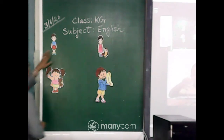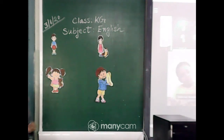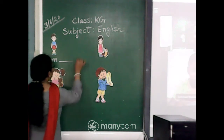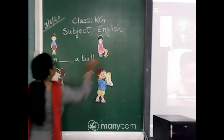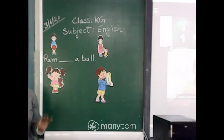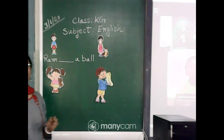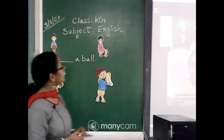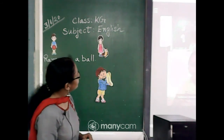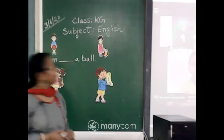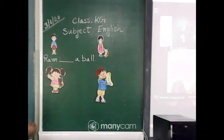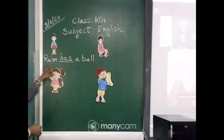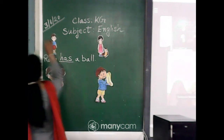Here you can see this boy — let us name this boy Ram. So if this is Ram, then Ram dash a ball. Ram is standing with a ball, so what will you write in the answer? Very good, Arush and Nandini. So here comes: Ram has a ball. Ram has a ball — this is number one.